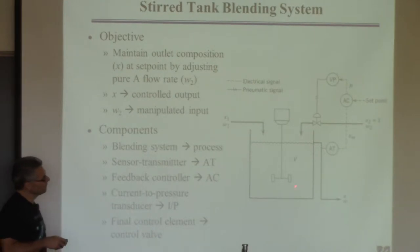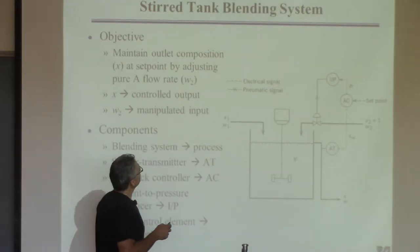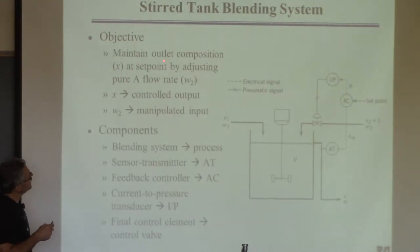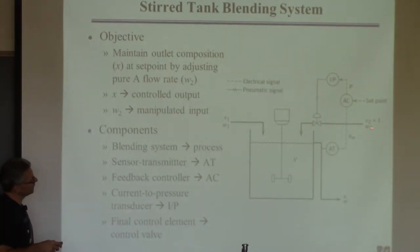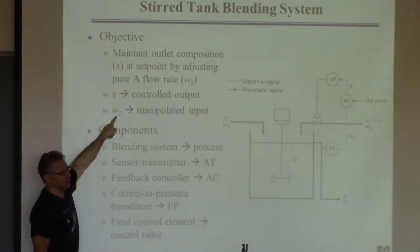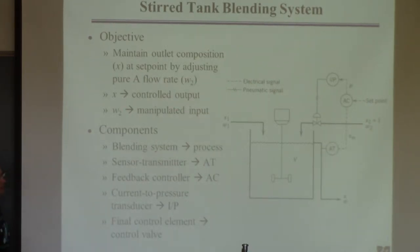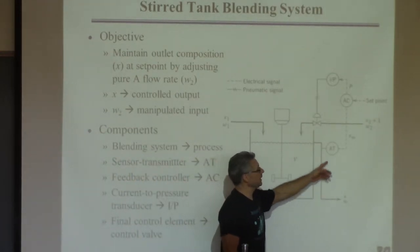The problem: maintain the outlet composition X at the set point by adjusting the flow rate of the pure A stream. The outlet composition X is called the controlled output — it's what we want to control. The pure A flow rate is called the manipulated input. In control, you always have to have something you can manipulate in order to control something. If this composition changes, the manipulated input compensates for it.